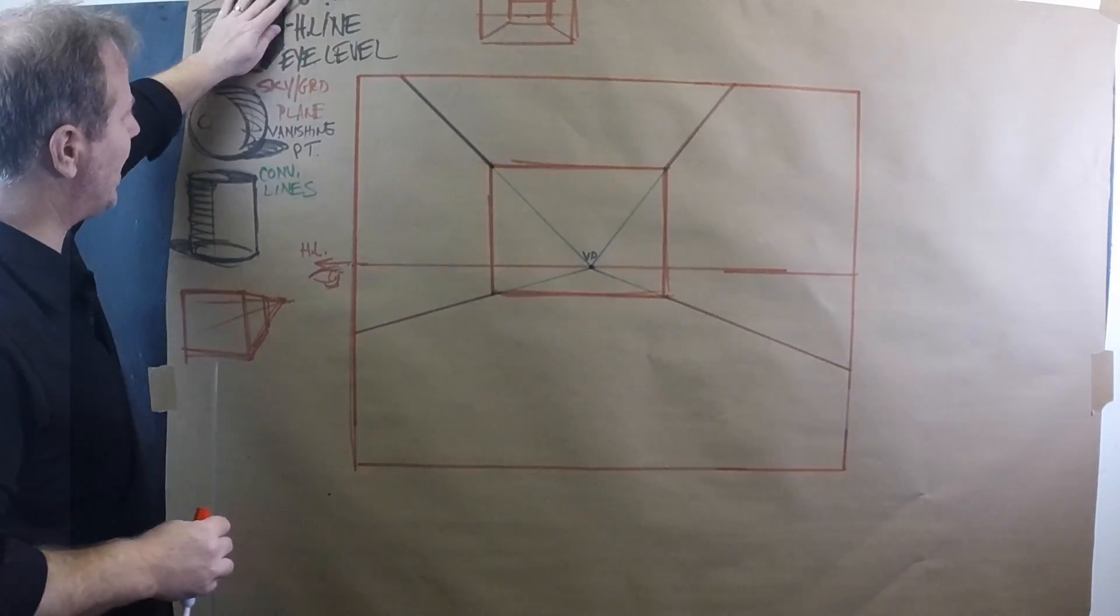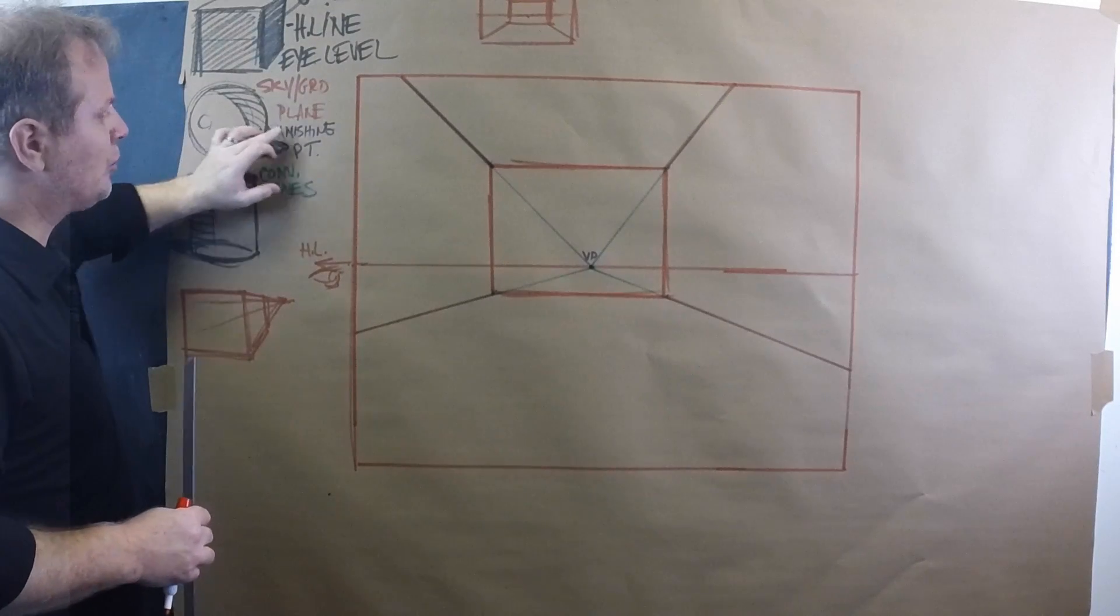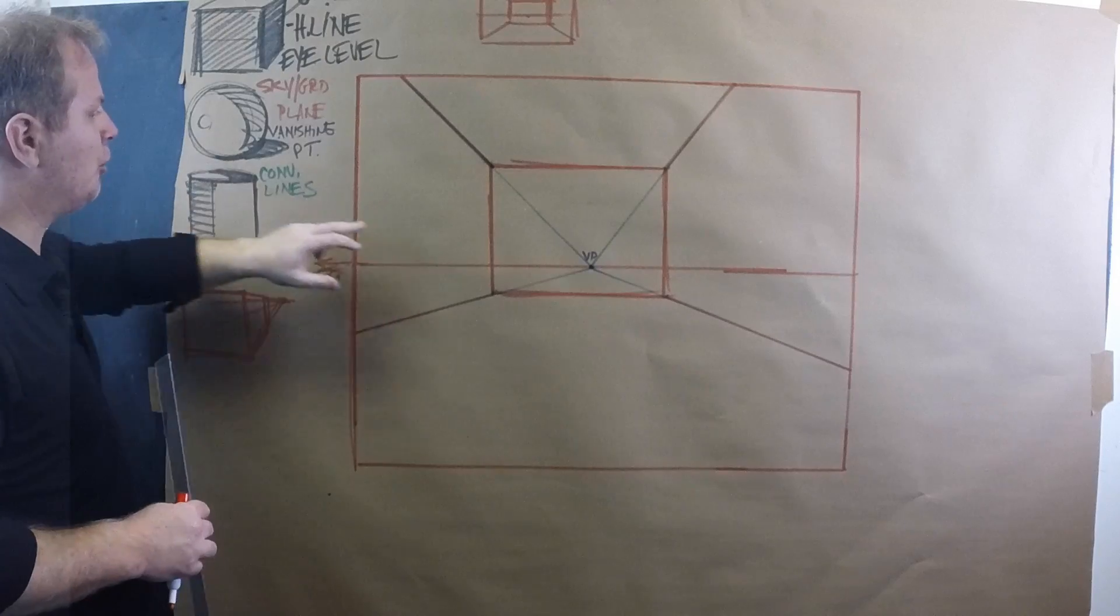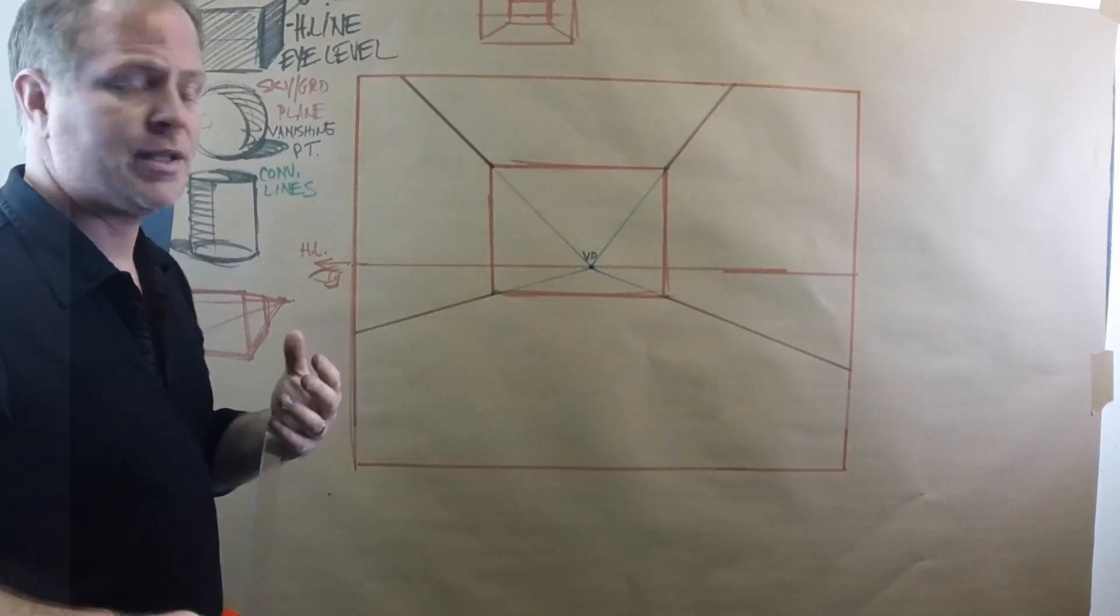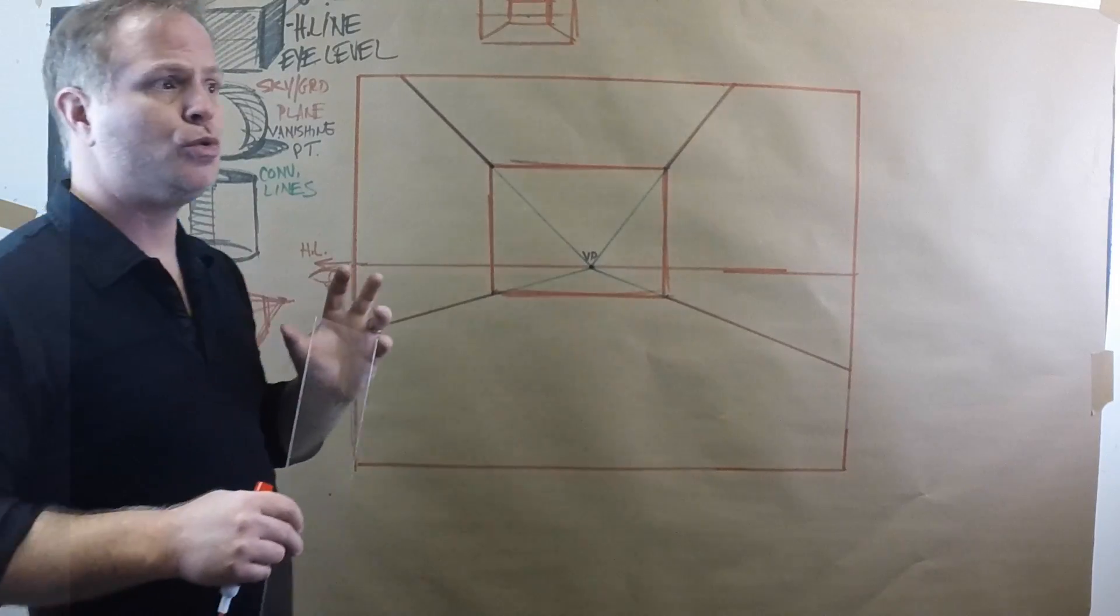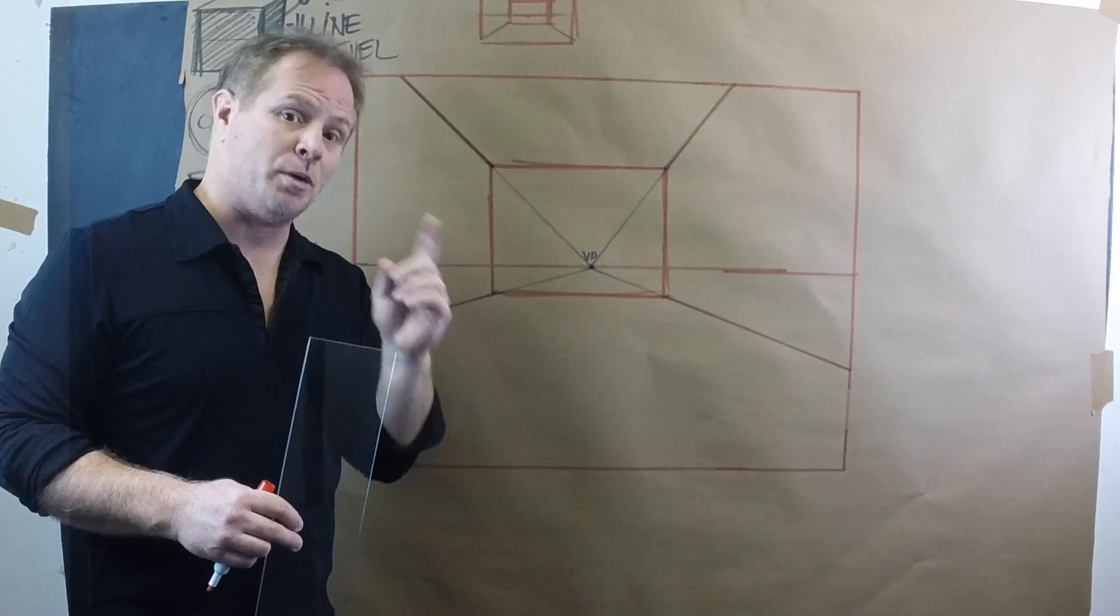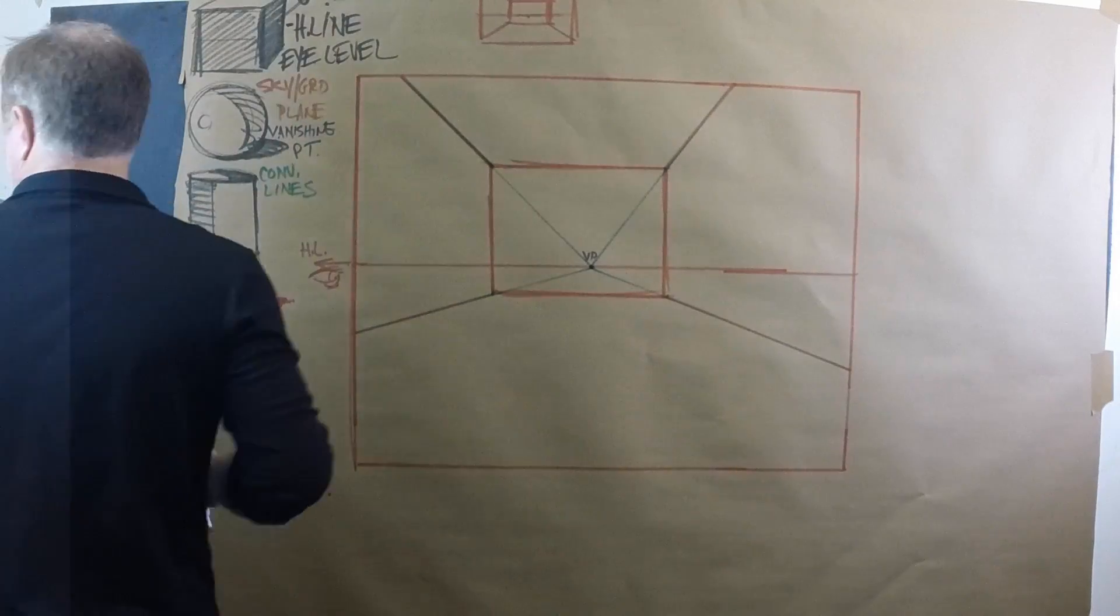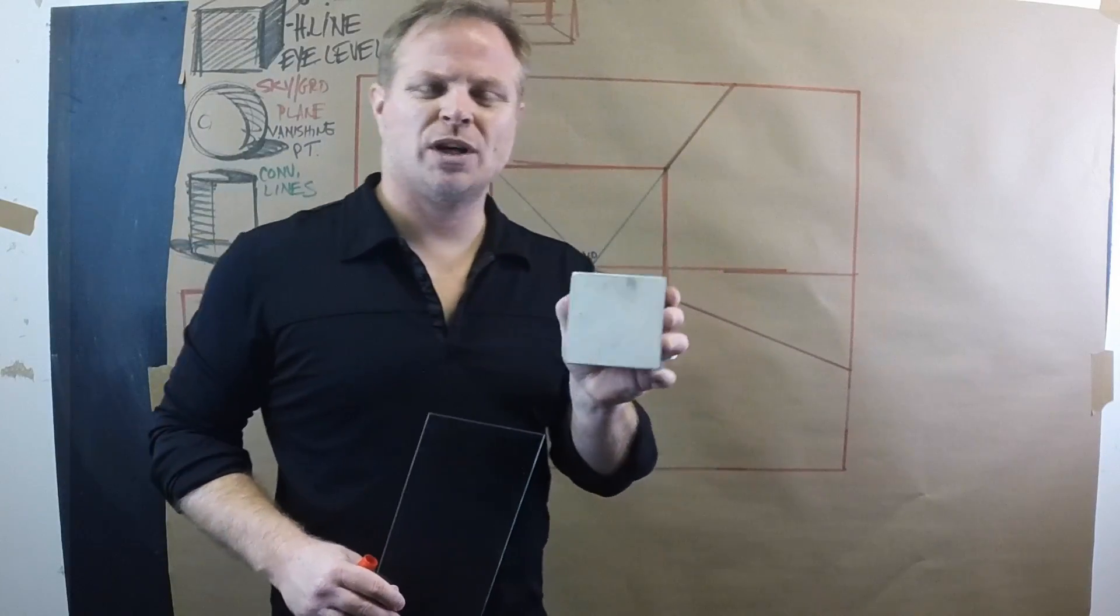So now we have an accurate one-point perspective room that we can start to place objects and forms in our composition. So we have eye line, eye level. We establish sky plane, ground plane, use of a vanishing point, and now convergence lines to help our forms in space to feel real and have the illusion of depth in one-point perspective. Let's start to now make some cubic forms. We'll just stick with...